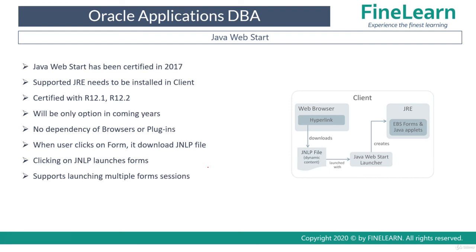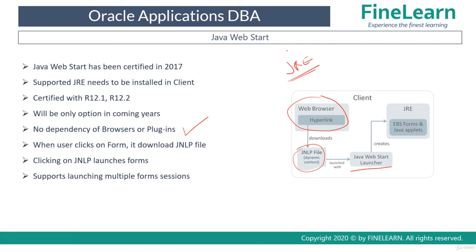The newly certified option — certified since 2017 — is Java web start, which is the future of accessing Oracle Forms in E-Business Suite. To open forms using Java web start, all you require is simple JRE software with no browser dependency. When the user clicks on a form using Java web start, it downloads a JNLP file. When you click this JNLP file, it uses the Java web start launcher — which is part of your JRE software — to directly communicate with E-Business Suite forms and open them. The biggest advantage is there is no dependency on any browsers or plugins, making it a very simple and straightforward method. This will be the only option in coming years for accessing Oracle Forms, so if your environment is currently using Java plugin, it is highly recommended to configure Java web start.